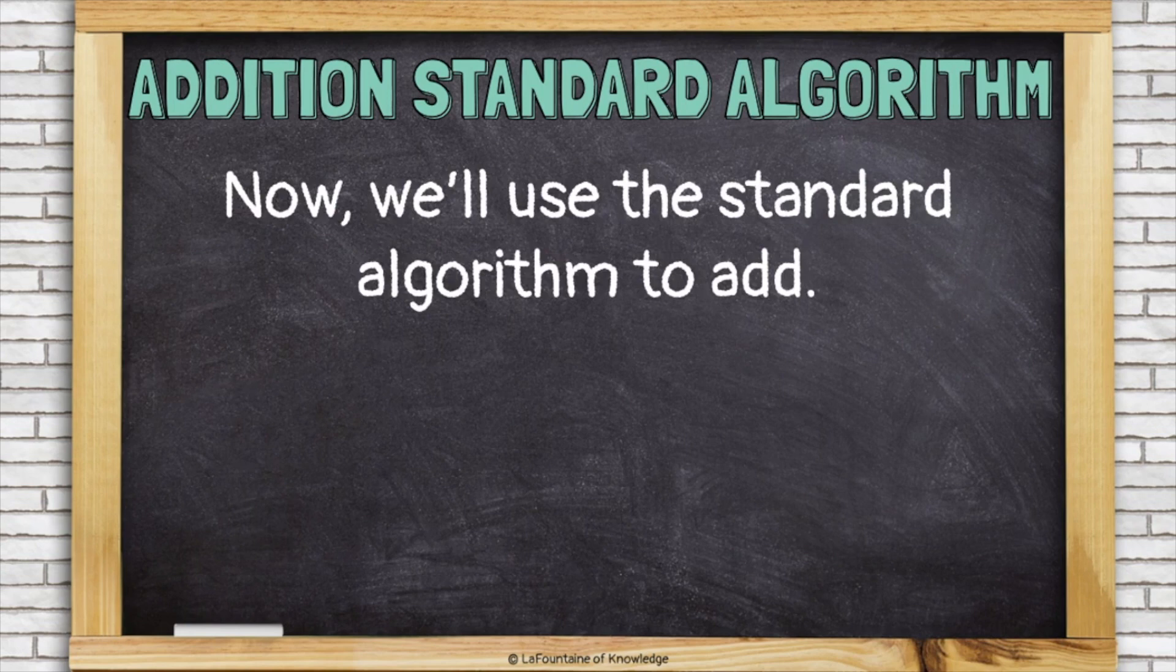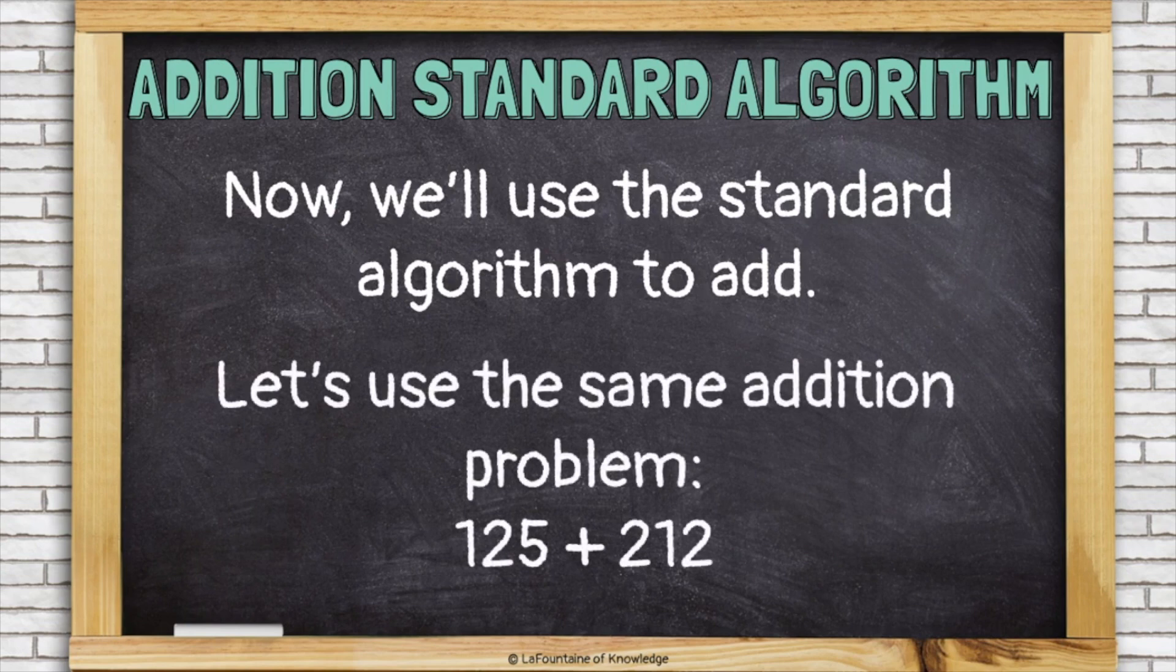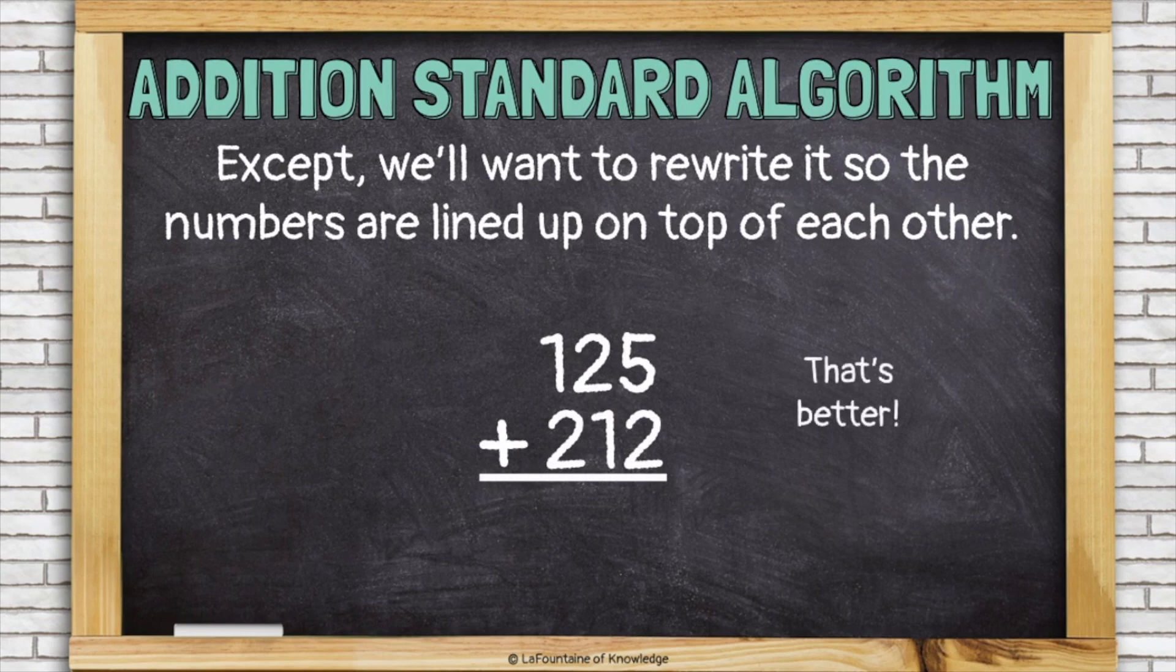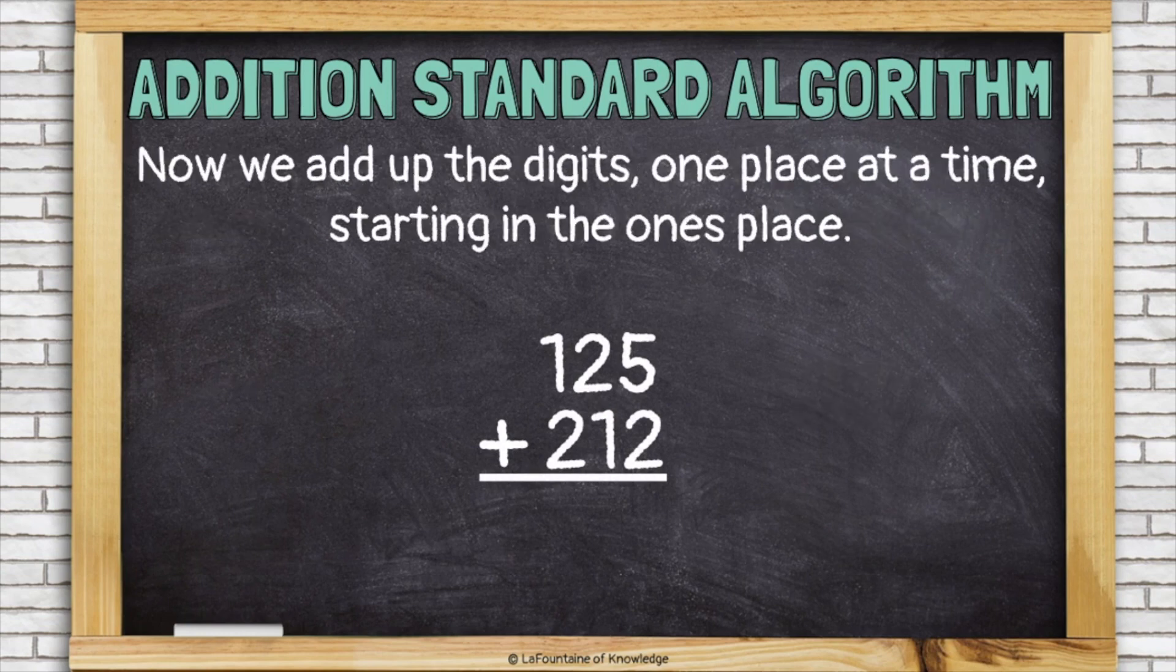Now let's look at that using the standard algorithm to add. Let's use the same addition problem, 125 plus 212, except we'll want to rewrite it so that the numbers are lined up on top of each other like this. First we're gonna add up the ones place, so five plus two is seven. Then we'll add up the tens place, two plus one is three.